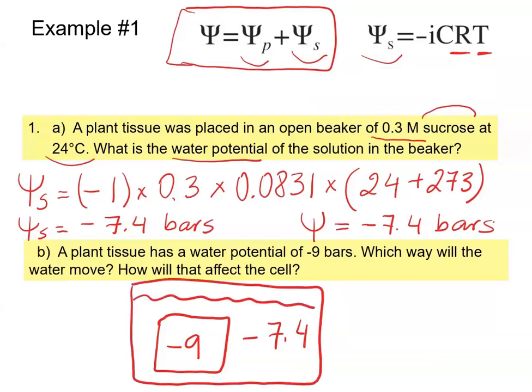Now we determine which way the water will move. Remember: osmosis is the diffusion of water, and water moves from high water potential to low water potential. The water potential is lower inside the cell, so water will move into the cell. We can describe the solution as hypotonic.